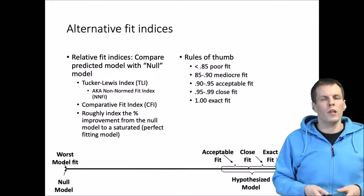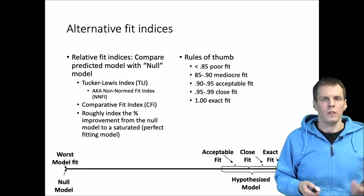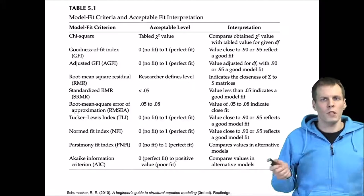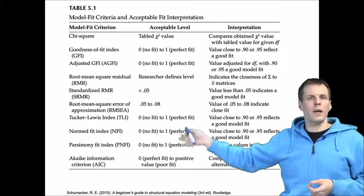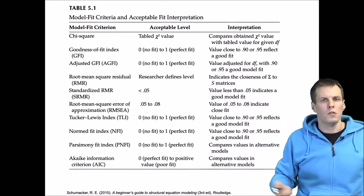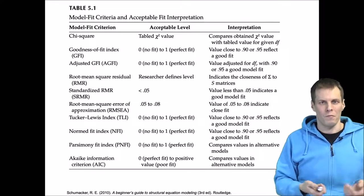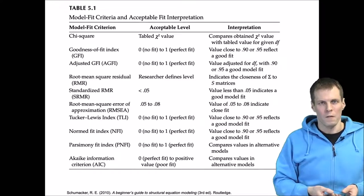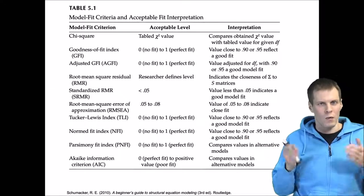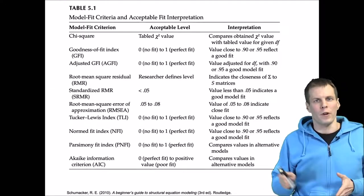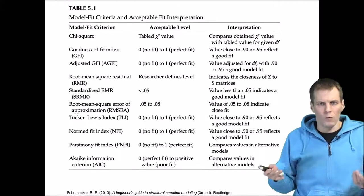When you read about these indices you find all kinds of tables from books listing cutoffs, and there are many other indices as well. Model evaluation essentially reduces to finding the right index, finding the right cutoff, and finding the right book to recommend the cutoff that you want to apply. This is not a good research practice.